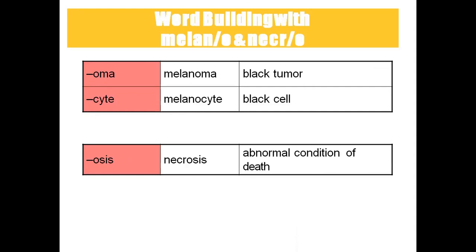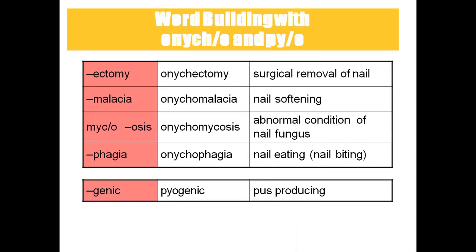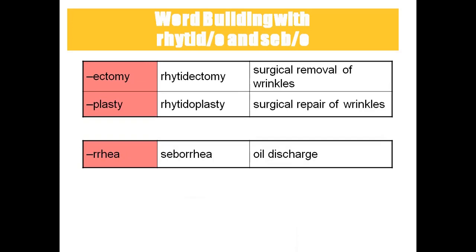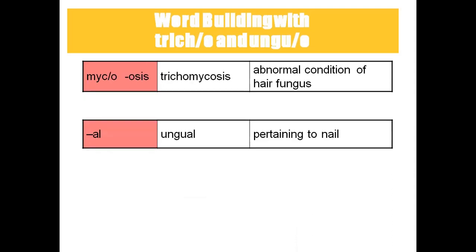Onychectomy means surgical removal of nail. Onychomalacia means nail softening. Onychomycosis means fungal infection of the nail. Onychophagia means nail biting or nail eating. Pyogenic means pus production. Rhytidectomy means surgical removal of wrinkles. Rhytidoplasty means surgical repair of wrinkles. Seborrhea means oil discharge. Trichomycosis means abnormal hair fungus. Ungual means pertaining to the nail.